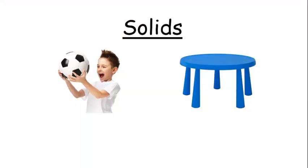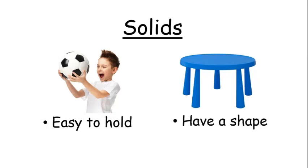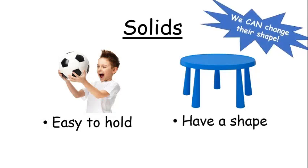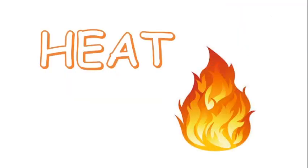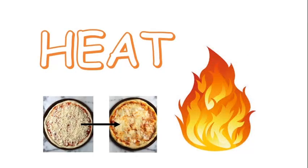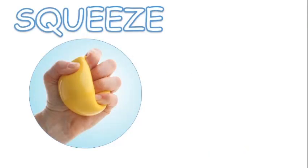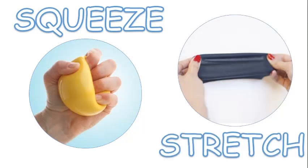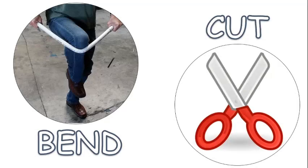Solid materials are easy to hold and have a shape, but we can change their shape with heat, like the cheese on this pizza. We can also squeeze solid materials to make them smaller, and we can stretch solid materials to make them bigger. We can also bend and cut solid materials too. This gives them a new shape.